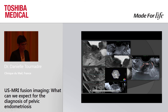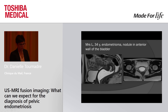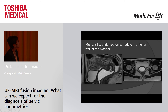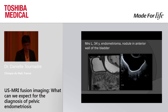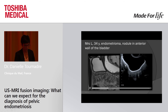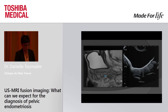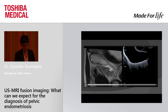Two examples of disagreement between MRI and fusion imaging. First, a 34-year-old woman with an endometrioma where the radiologist suspected a nodule in the inner wall of the bladder, which is unusual. During fusion imaging, the serosa was thin and there was no nodule in the bladder wall — something suspected on MRI but nothing found on fusion.